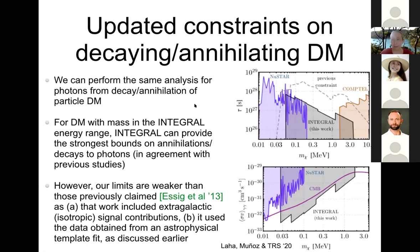We can also take the same data set and do the same calculation for decaying or annihilating dark matter that decays or annihilates into photons or electrons at the higher end of the mass range. Generally, INTEGRAL provides the strongest bounds on annihilation and decay to photons. The dashed line is the constraint previously claimed by Essig et al. in 2013, based on comparing dark matter to the sum of astrophysical template emission. The black line is what we get by instead comparing to the sky imaging approach. For annihilation, this simplified analysis sets constraints stronger than the NuSTAR results and stronger than the CMB in the range where they overlap.